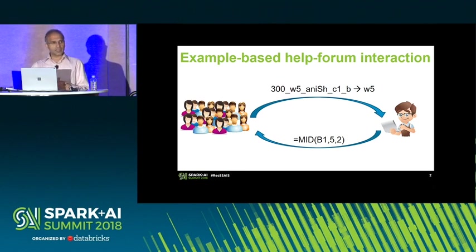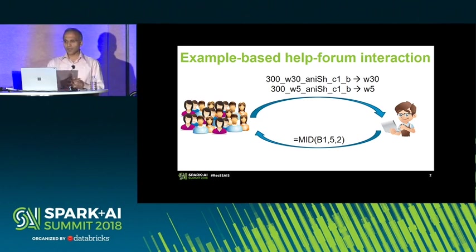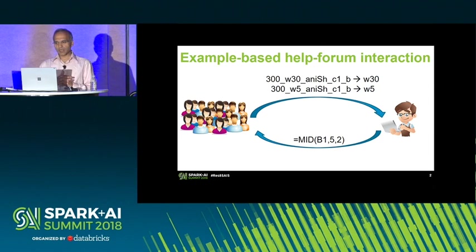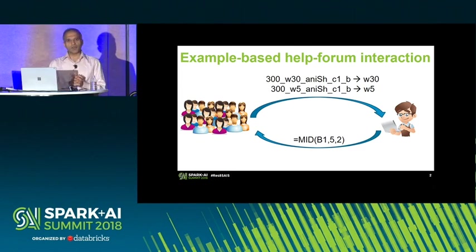The end user takes this program, runs it on other input in their spreadsheet, and figures out that it does not do the right job on some other input. What is the user trying to do? Extract the substring between the first two underscores.